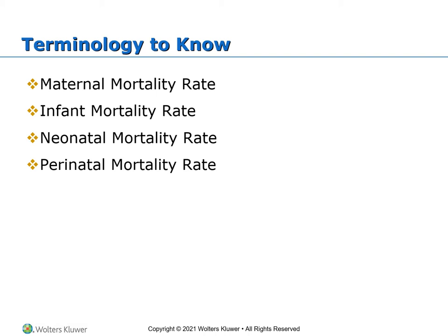Some terminology you'll need to know: The maternal mortality rate is the number of maternal deaths per 100,000 live births in the USA. In 2010, there were 21 women out of 100,000 who died. In 2020, there were 23.8 deaths per 100,000 live births. As you can see, the maternal mortality rate has increased, which is definitely an objective that nurses need to work on.